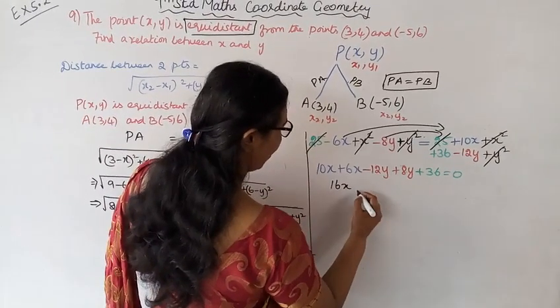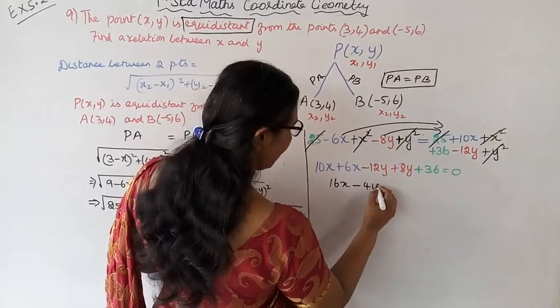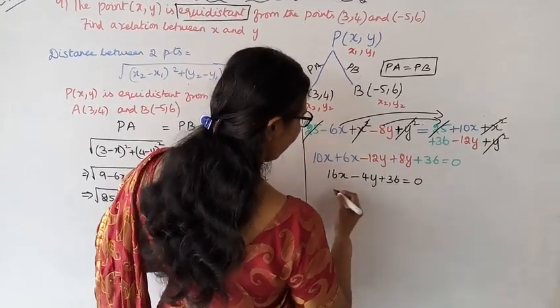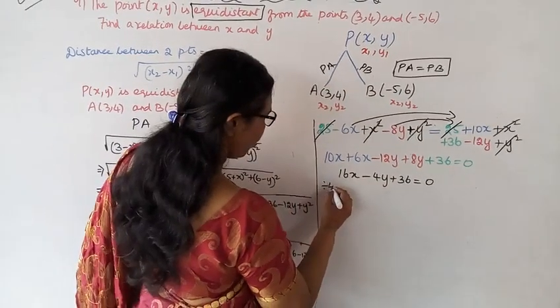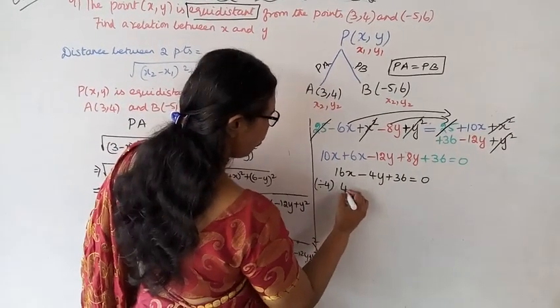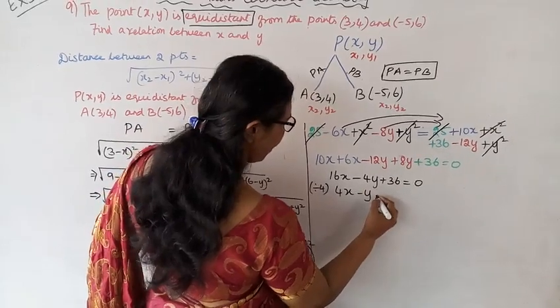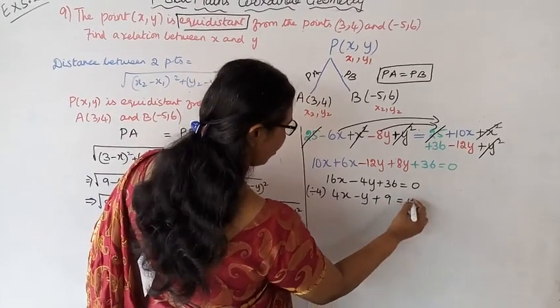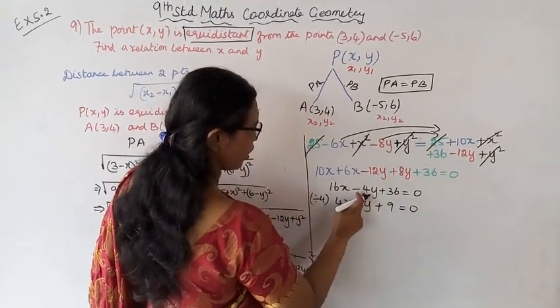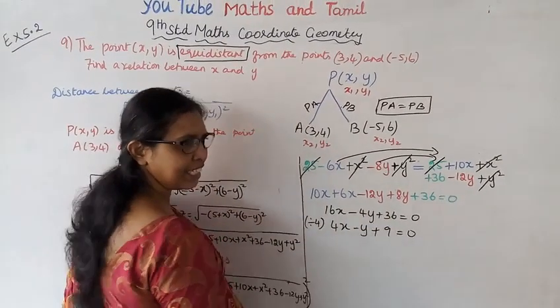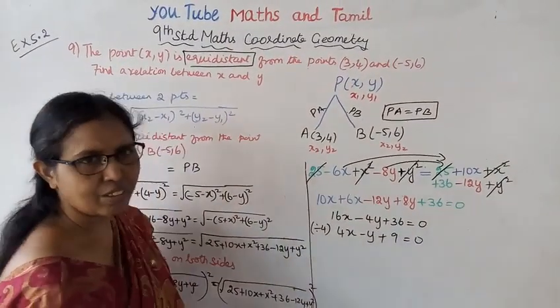10x plus 6x is 16x, minus 12y plus 8y is minus 4y, plus 36 equals 0. Dividing by 4: 4x - y + 9 = 0.